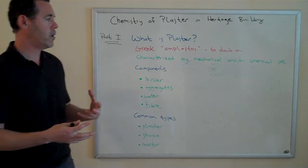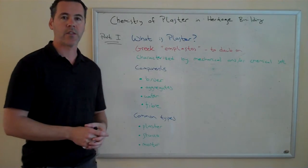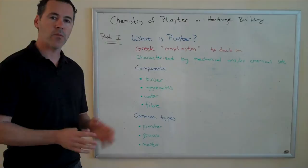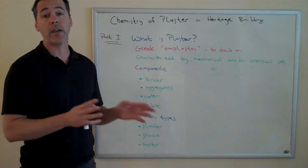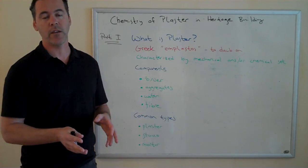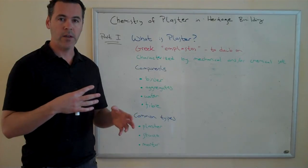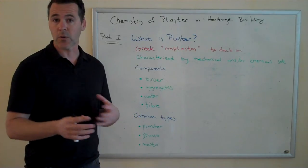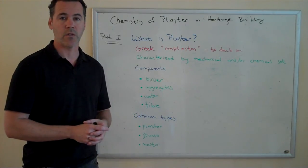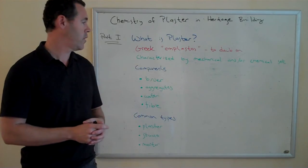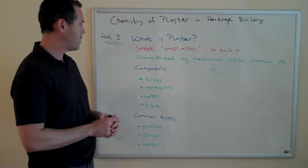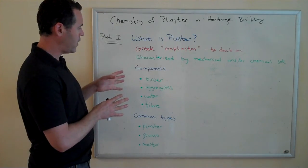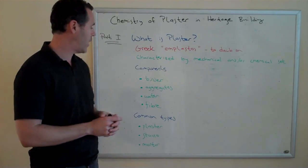Plaster is a wet slurry that's characterized either by a mechanical set and/or a chemical set. We'll be talking about the characteristics of those various sets in further videos. Sticking again to the basics, I want to talk briefly about the basic components that make up a plaster.